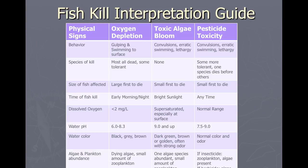Fish kills have tell-tale signs based on the type of pollution that caused them. If you have a fish kill which begins with the fish displaying erratic swimming behavior, with the smallest fish dying first, and the water being a dark green color, we can assume the fish kill was caused by a toxic algal bloom.